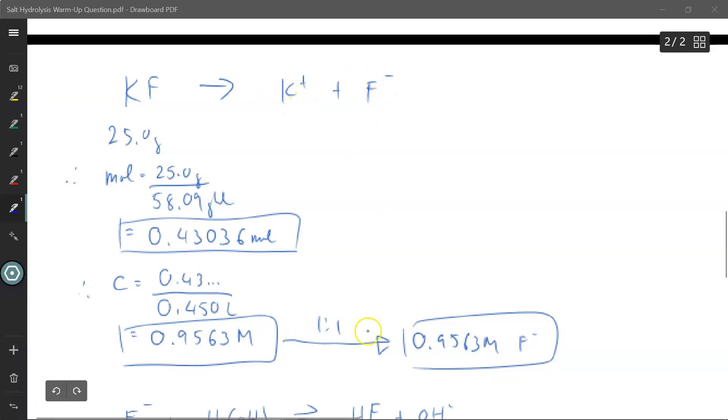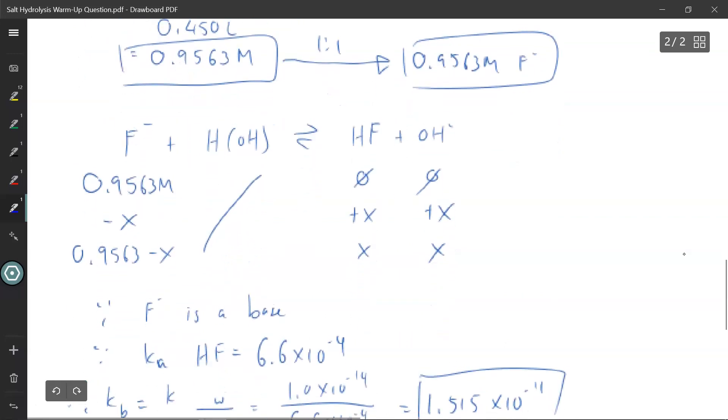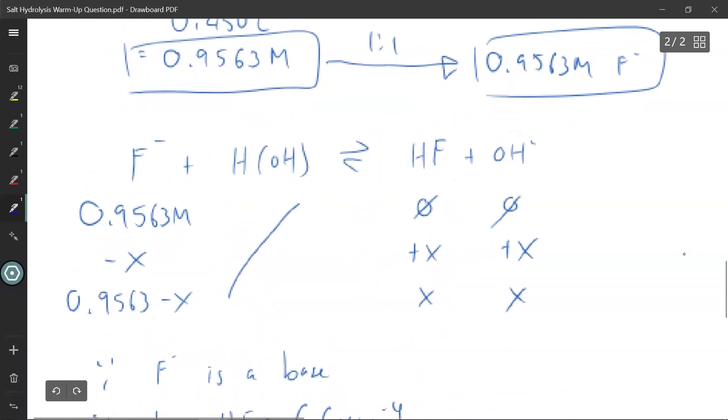Only the fluorine will affect the pH of my solution. So the fluorine concentration is 0.9563 moles per liter. Moving up, let's take a look at the fluorine and see how it interacts with the water. So we have fluorine in an ICE chart, 0.9563 moles per liter. It's going to react with water.